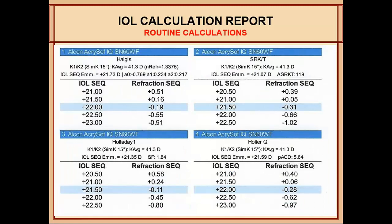The third part of the routine calculations page shows four quadrants. I personally like to do all calculations for one implant — I use the AcrySof SN60WF — and I look at the Haag formula, SRKT formula, Holladay One formula, and Hoffer Q formula. You can add newer formulas if you'd like, or customize it with one formula and four lenses, or two formulas with two lenses — whichever way you prefer.